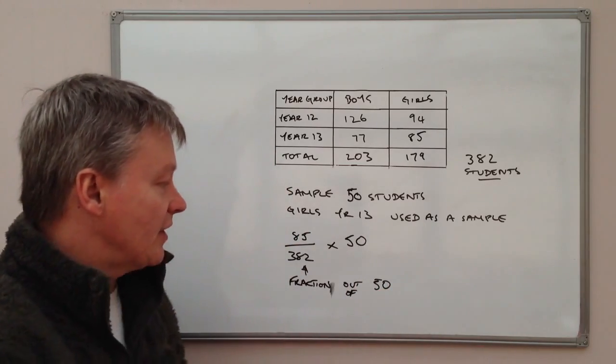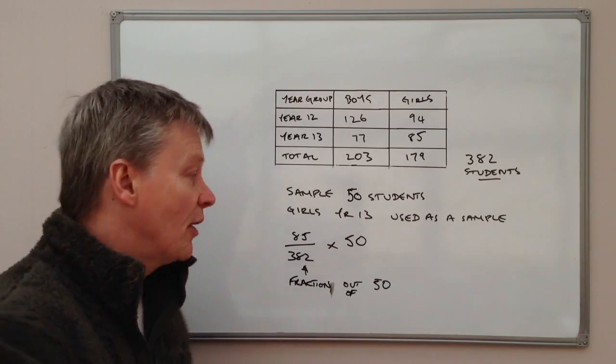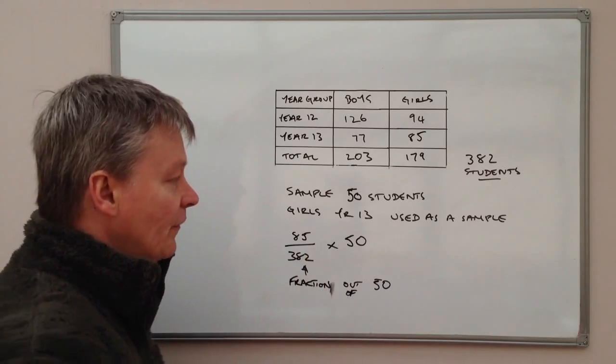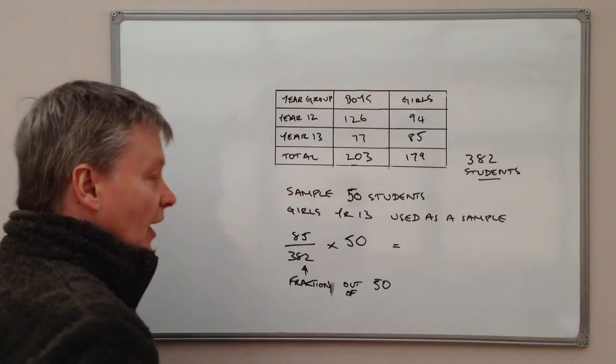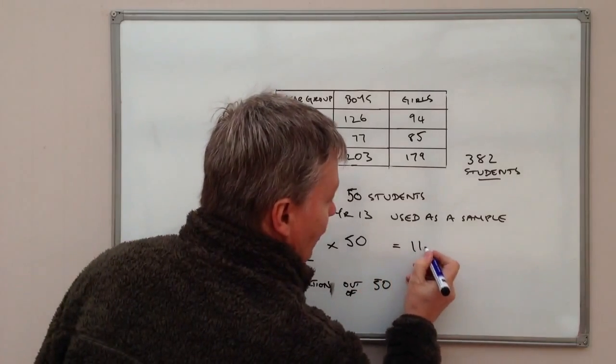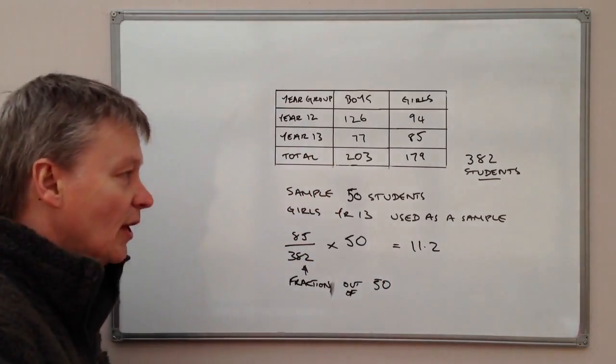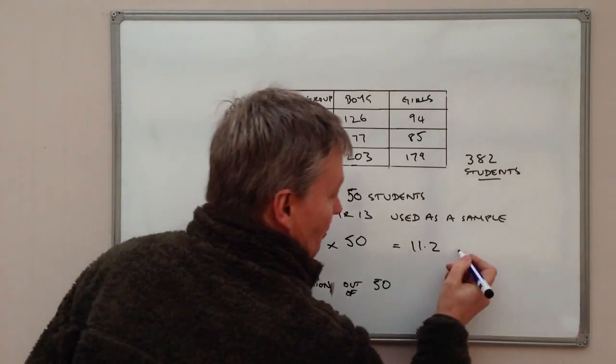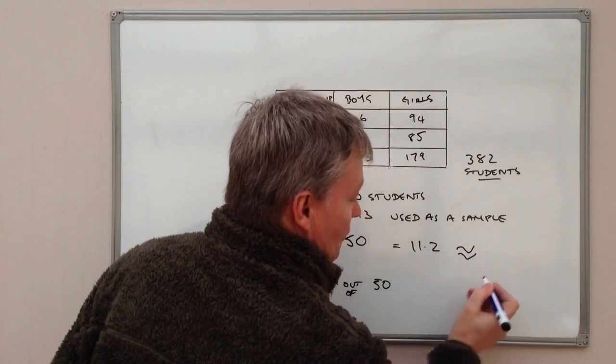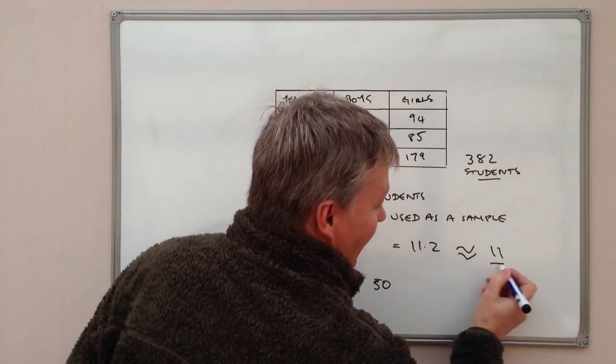And mathematically, I'm going to write that as 85 over 382 multiplied by 50. And if you use a calculator, that will calculate to 11.2. Obviously, you can't have 0.2 of a student, so the approximate number of students would be 11.